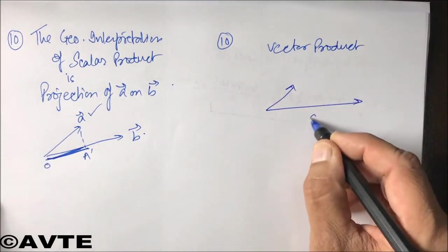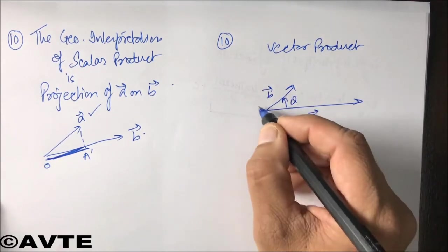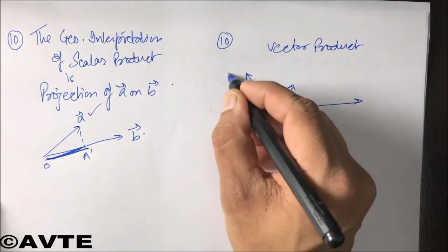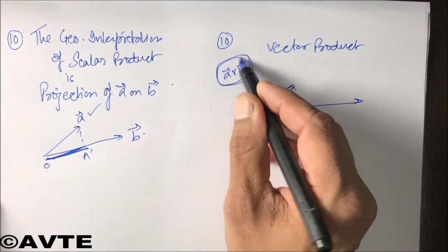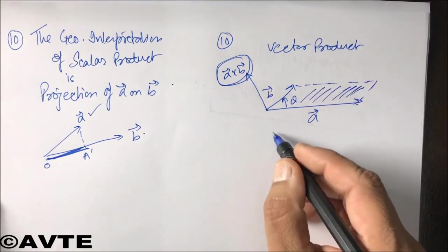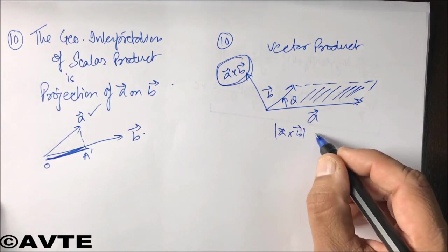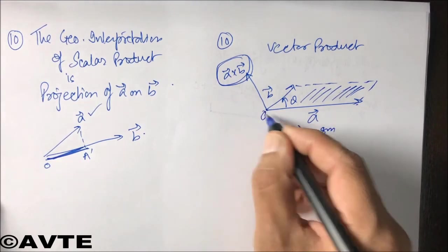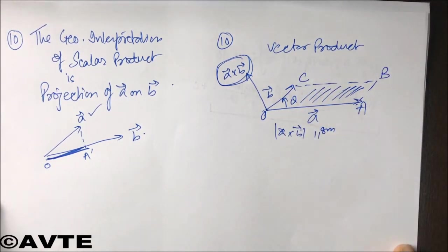Whereas the geometric interpretation of vector product is the area vector, that is the area of parallelogram. If I take a vector and b vector to be the adjacent sides, then this a cross b vector will indicate the area vector. That is, it will indicate the entire area of parallelogram OABC. So this is the area of the parallelogram.